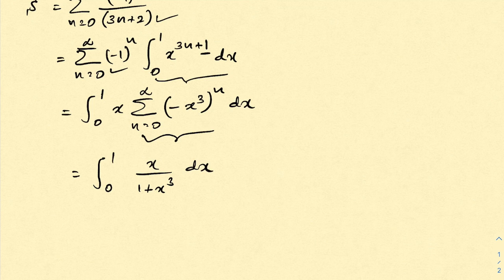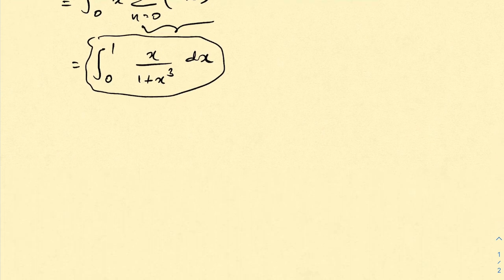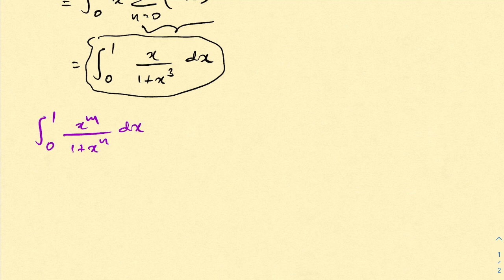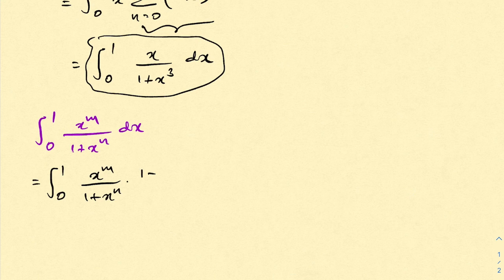Now, how to evaluate this integral? I am going to generalize: consider the integral from 0 to 1 of x to the n over 1 plus x cubed dx. Here we also look at the integral from 0 to 1 of x cubed over 1 plus x cubed dx, and I am going to multiply by 1 minus x cubed in both numerator and denominator.